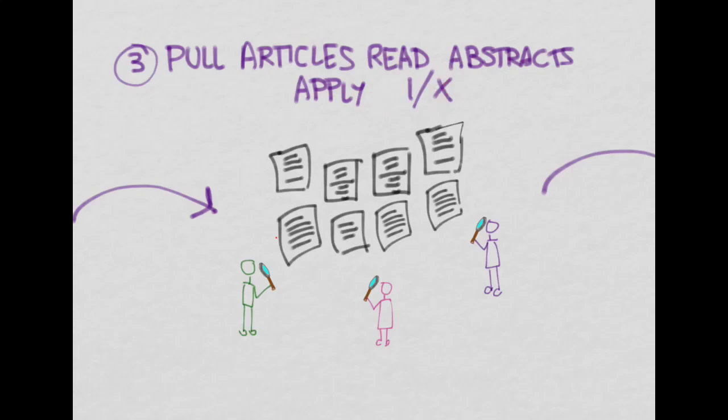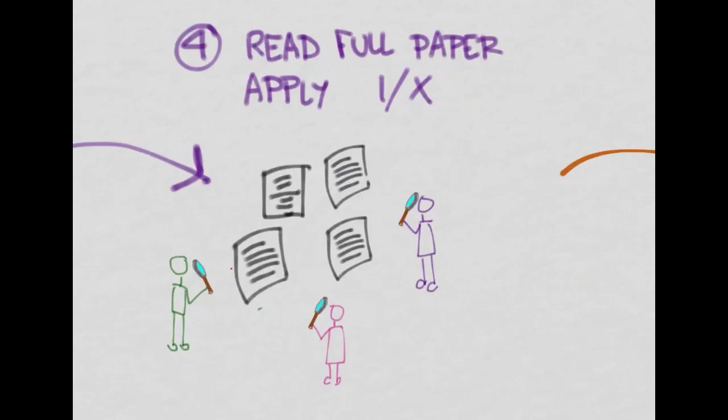So we would pull the articles, read the abstract, apply the inclusion and exclusion criteria. Then the next step is to actually read the articles. Now you go back, you go into the ones that met the first pass. Now you read them again and you decide which ones continue to meet our inclusion and exclusion criteria. And again, we're going to use the multiple reviewers method. If two people agree, we keep it. If not, we get a tiebreaker person in there who's going to decide whether to keep it or not.